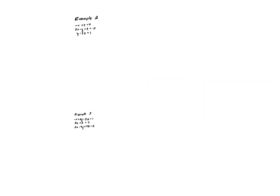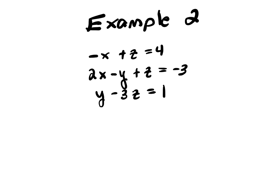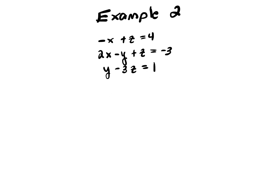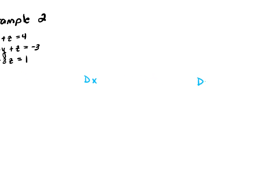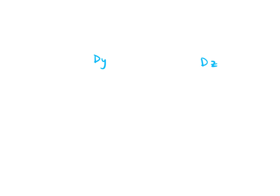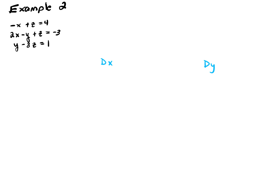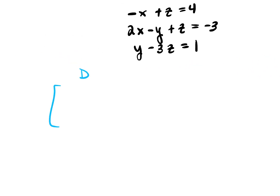Next page we're doing the same thing, but with a 3 by 3 matrix. Be careful, especially in example 2 — we're missing some terms, so be careful with putting zeros in the right spots. We need to find the determinant of the coefficient matrix, D sub X, D sub Y, and D sub Z, since it's a 3 by 3 — four determinants total. The first row of the coefficient matrix is negative 1, 0, 1 — we don't have a Y term, so we put a 0 in the Y spot. Second row: 2, negative 1. Third row: we don't have an X, so 0, 1, negative 3.